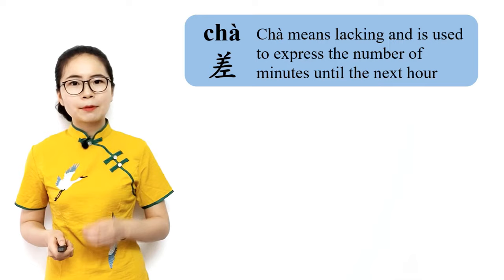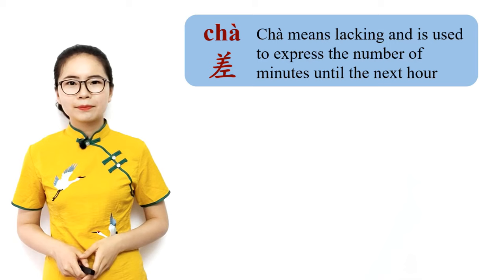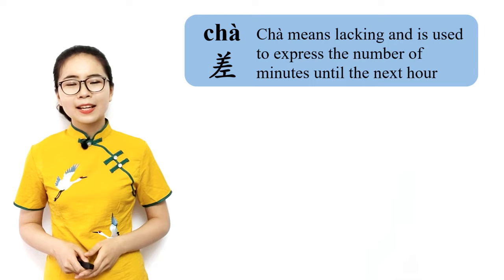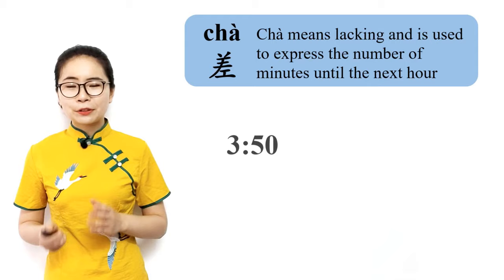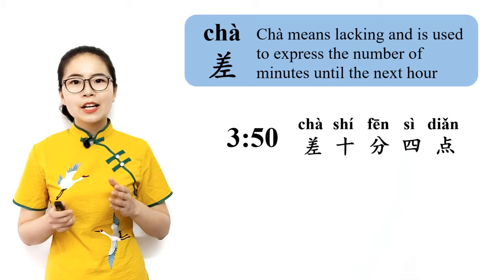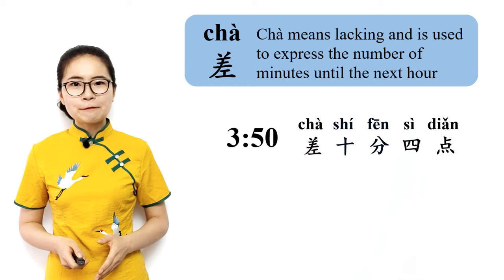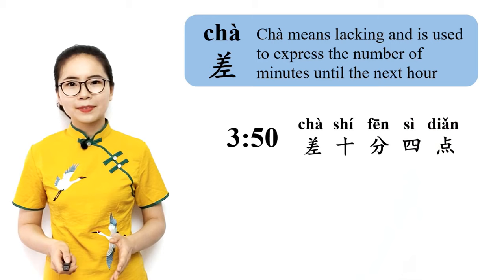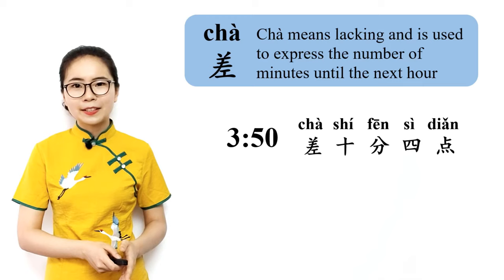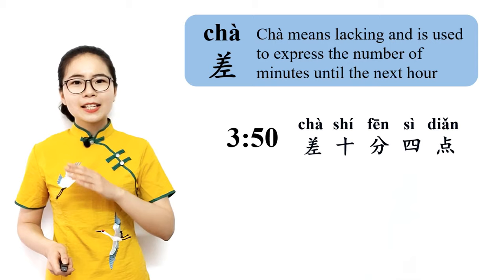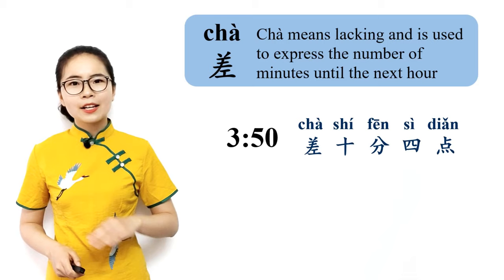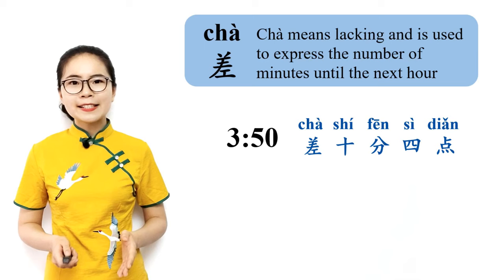Our last special case is 差. 差 means lacking, and is used to express the number of minutes until the next hour. Please repeat after me: 差, 差, 差. This can be used when it's getting close to the next hour. For example, 3:50 is 10 minutes to 4, so you can say 差十分四点 — 差 means lacking, 十分 means 10 minutes, and 四点 means 4 o'clock. So literally it means lacking 10 minutes to 4 o'clock, in other words, 10 minutes to 4. Please repeat after me: 差十分四点, 差十分四点, 10 minutes to 4.